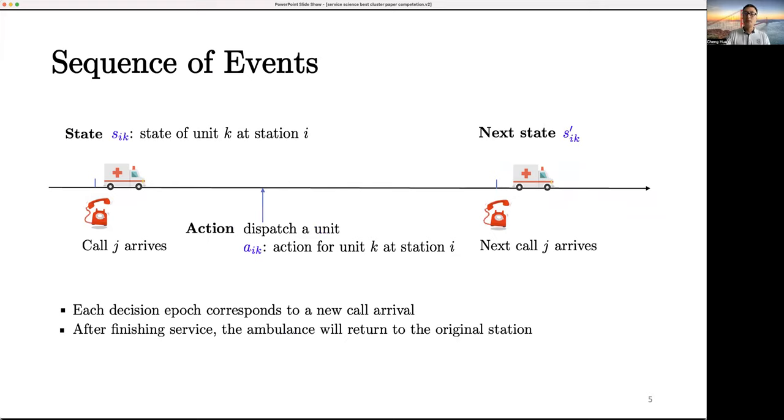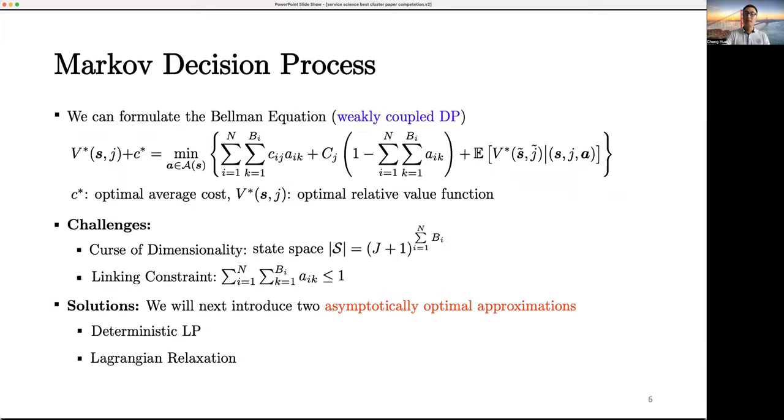Each decision epoch corresponds to a new call arrival because we only need to make a decision when an emergency call arrives. After observing the state of all ambulance units, we need to decide which unit to be dispatched. When it finishes the service, it will return to the original station.